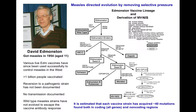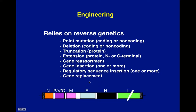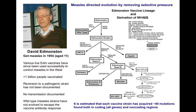It is estimated that each vaccine strain has at least 40 mutations in both the coding and non-coding regions. Various cell types have been used in its attenuation — including chicken embryos and chicken embryo fibroblasts — and you can get a number of different strains, but all of them have failed to revert. Engineering, as distinct from directed evolution, relies on reverse genetics.